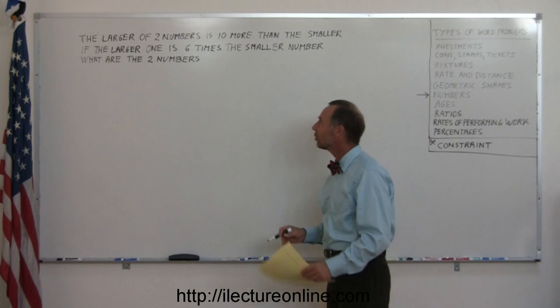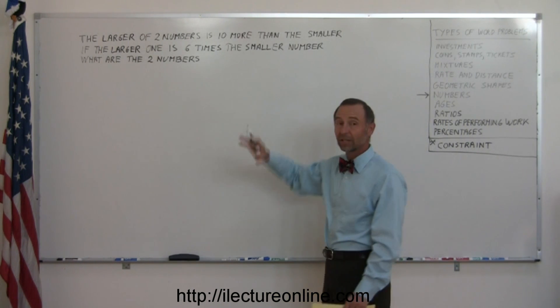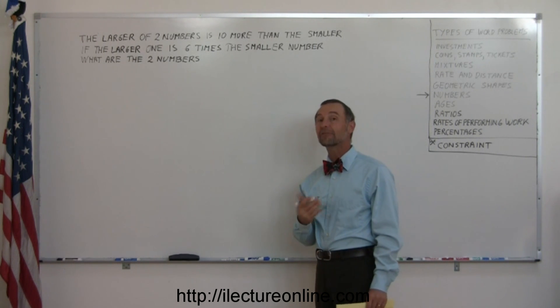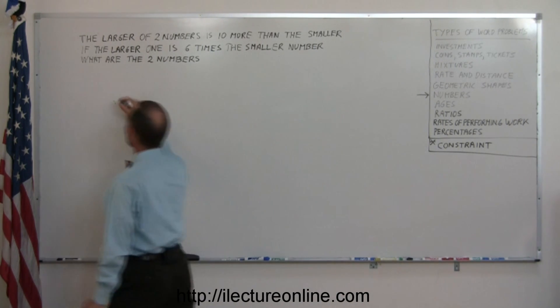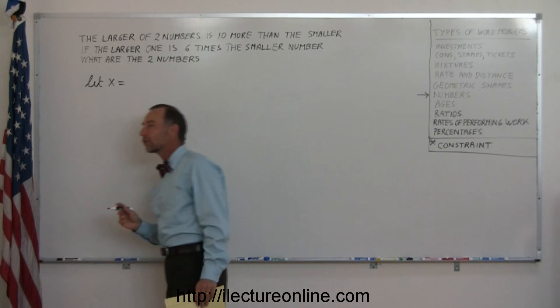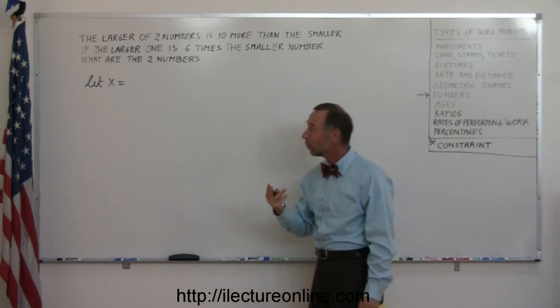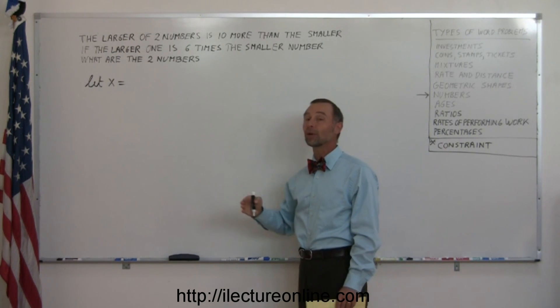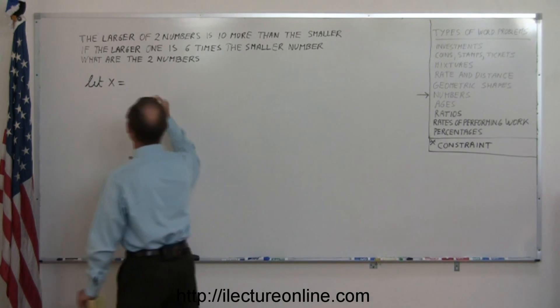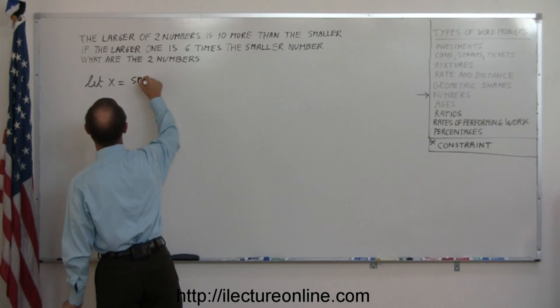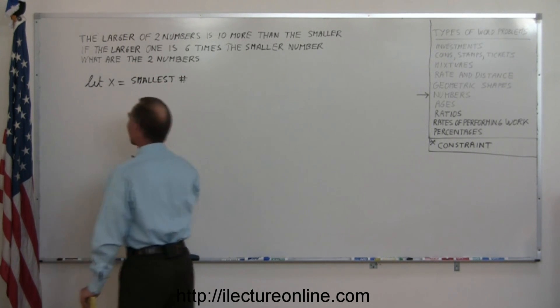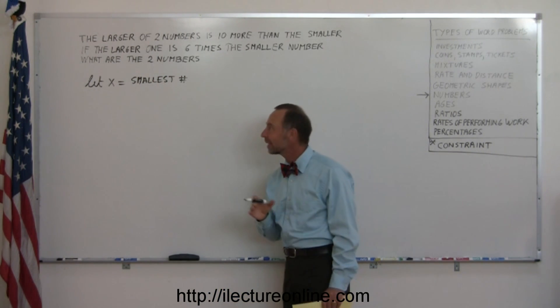The first thing you want to do is recognize that you're dealing with two numbers. So you want to let the numbers be represented by a variable. Typically, we like to use x. You write down let x equal, and since there's only two numbers, you want to let x equal one of the two numbers. It's usually a good idea to let x equal the smallest number. So we're going to let x equal the smallest of the two numbers. And yes, it is a good idea to write out exactly what you let x represent.